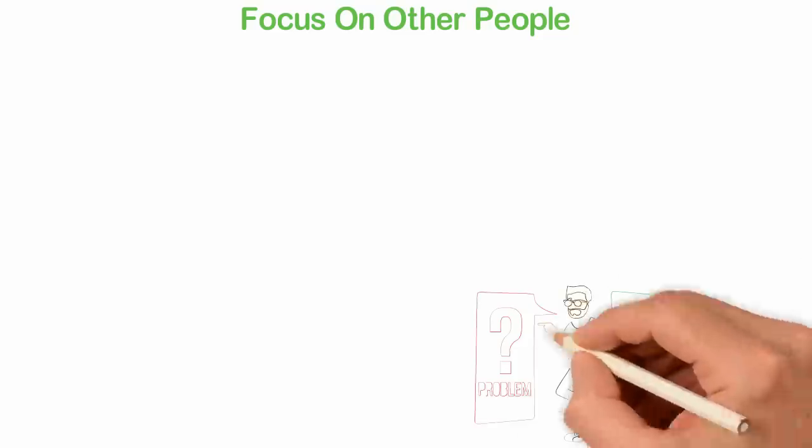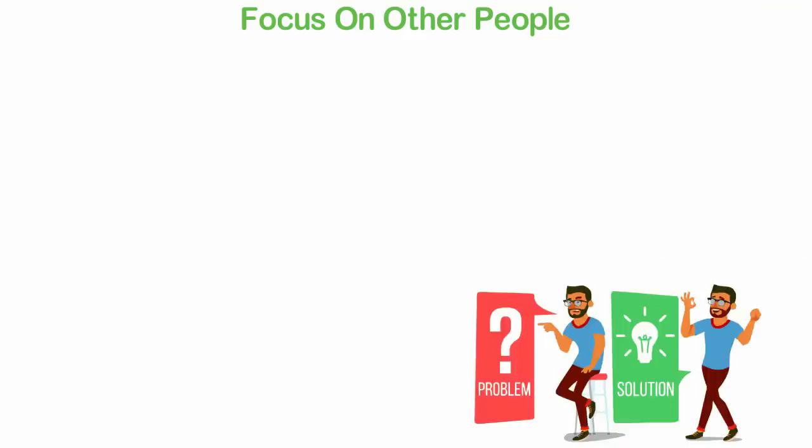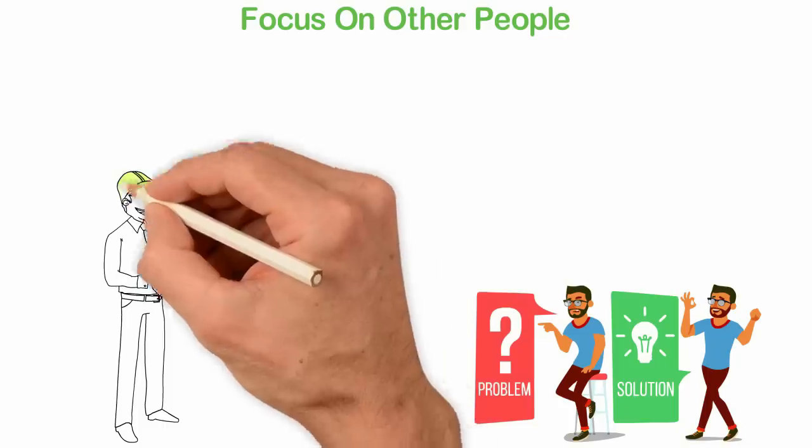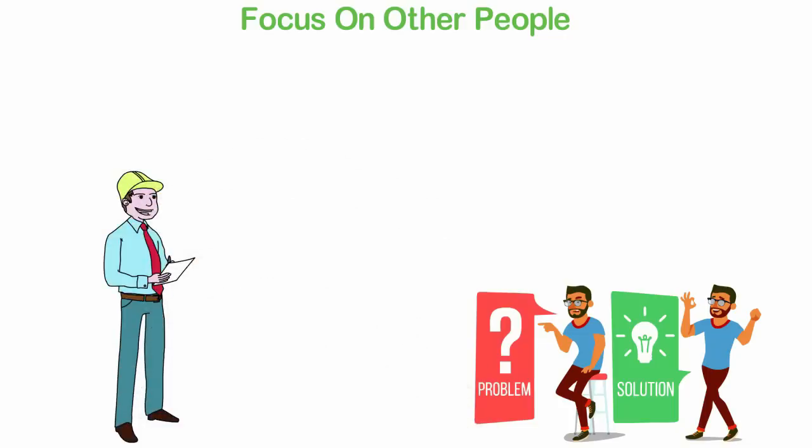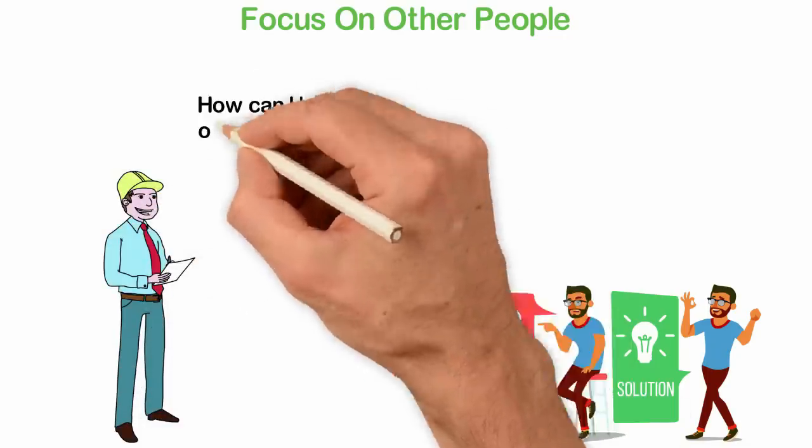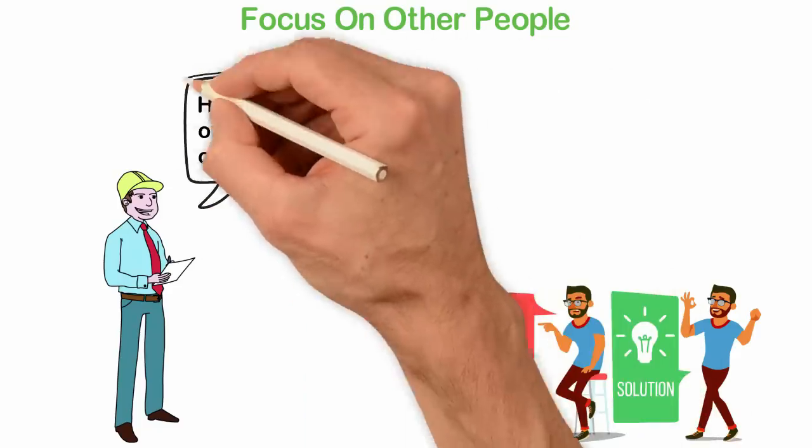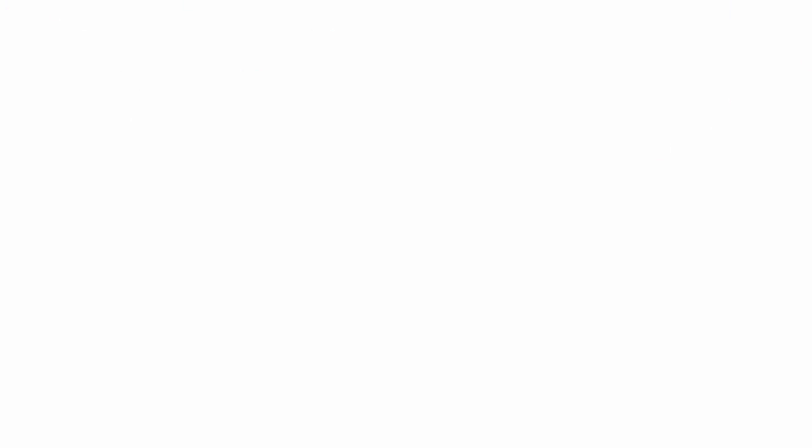Focus on other people. It happens that to be rich, you'll need to understand other human beings and seek ways to help them in some ways. This requires that you don't focus on yourself all the time. You can build the skill by spending one hour every week to think about the problems of other people in your country and ask yourself, how can I be of help with any of these? Continue doing this until it becomes natural that you have concern for others.